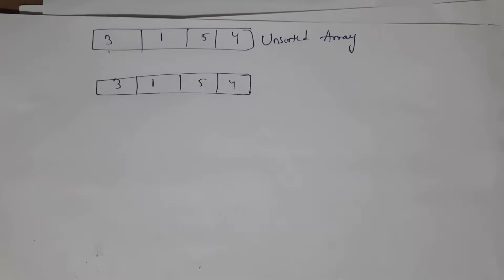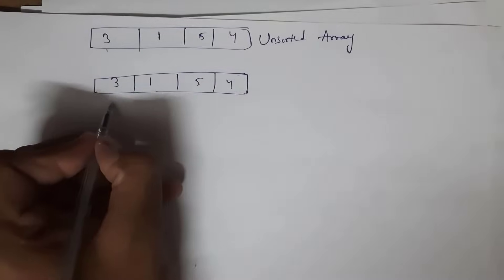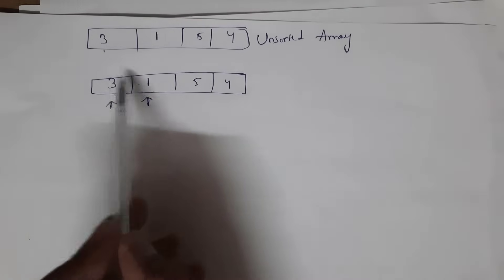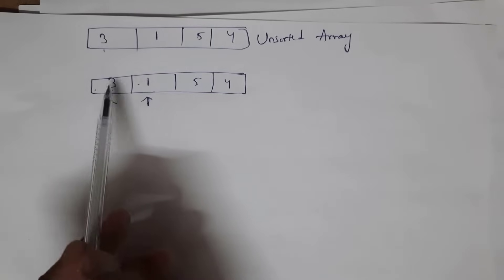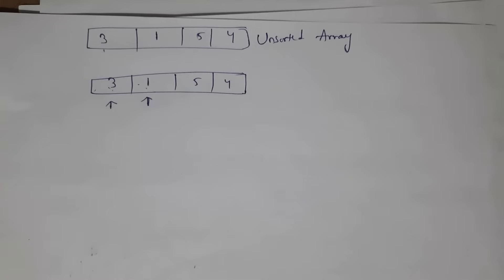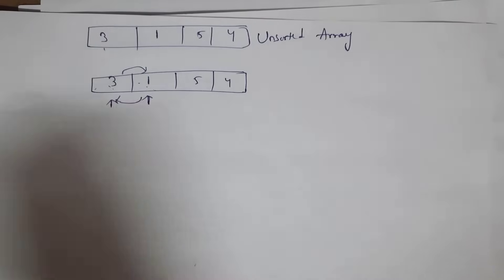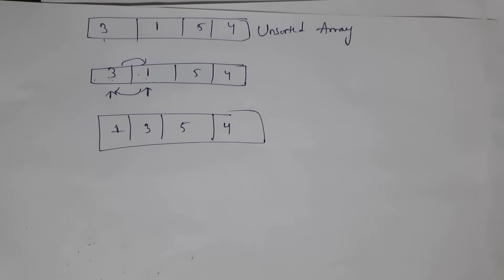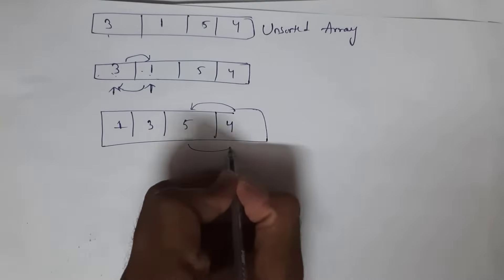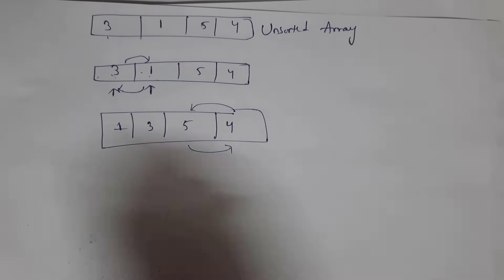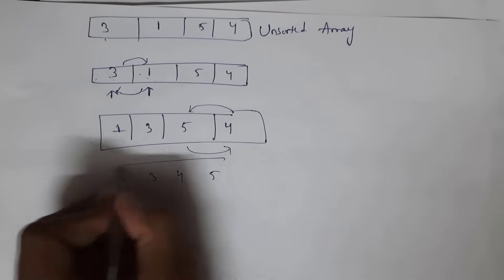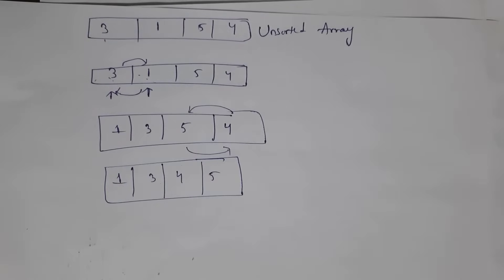The first element is three and the next element is one. Both are not in proper order because one must be first and three should come after. The definition of bubble sort says we swap adjacent elements if they are in wrong order. So we swap three and one. After swapping, the array looks like: one, three, five, four. Still unsorted because four and five need swapping. After swapping four and five, the array is in sorted manner.